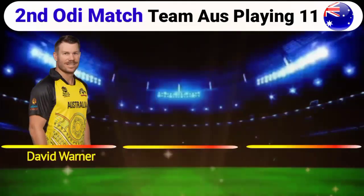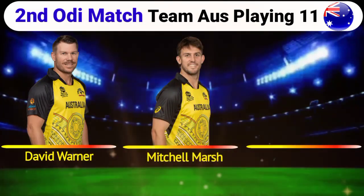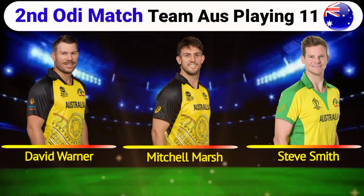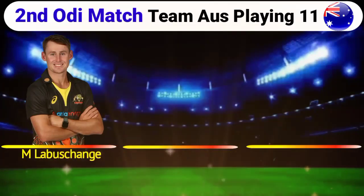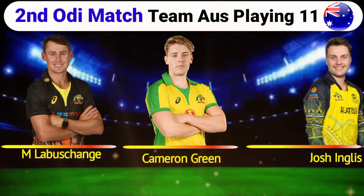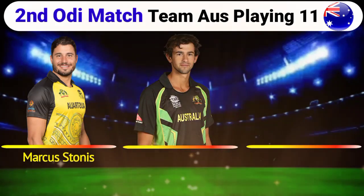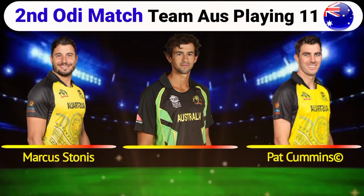Team Australia final playing 11: 1. David Warner, 2. Mitchell Marsh, 3. Steve Smith, 4. Marnus Labuschagne, 5. Cameron Green, 6. Josh Inglis, 7. Marcus Stoinis, 8. Matthew Short, 9. Pat Cummins (captain), 10. Sean Abbott, 11. Adam Zampa.